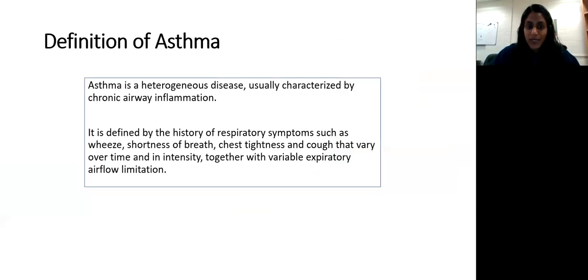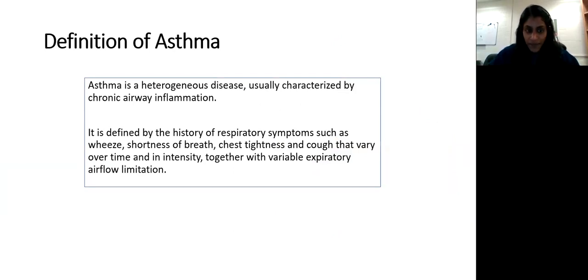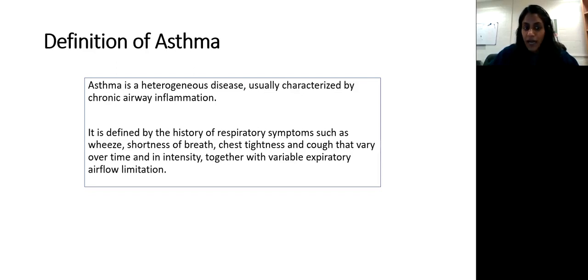Let's start with what is asthma, because even though most of us think we know asthma, there is really no great way to 100% diagnose this disease. It is a heterogeneous disease — not one cookie-cutter shape — and it comes in many shapes and sizes. It's usually characterized by chronic airway inflammation, defined by a history of respiratory symptoms such as wheezing, shortness of breath, chest tightness, and cough. A key feature is that it's variable over time in intensity, with airflow limitation.